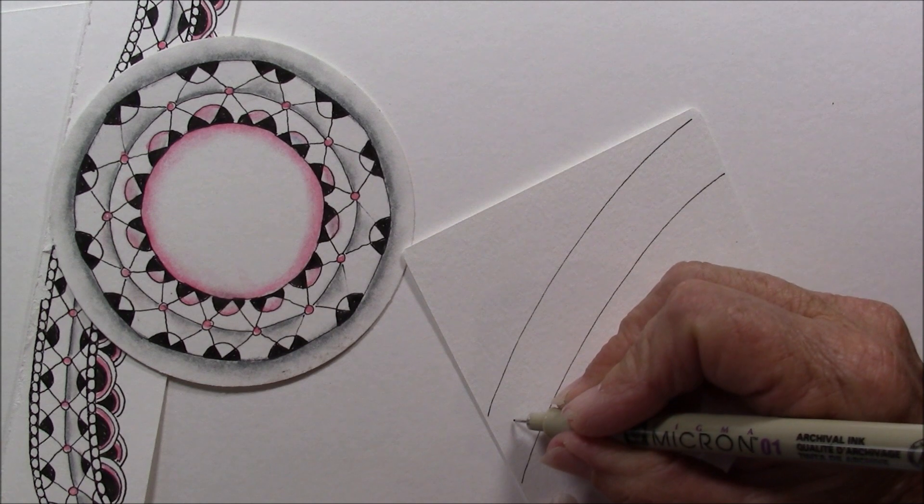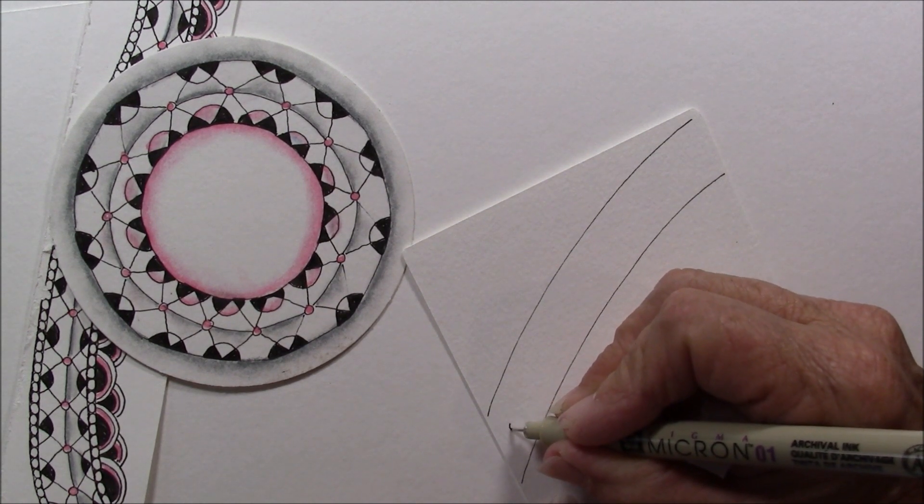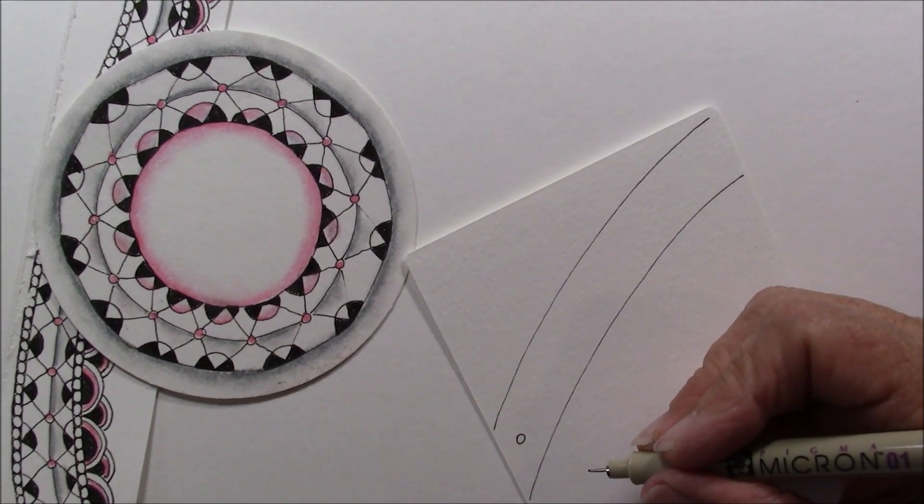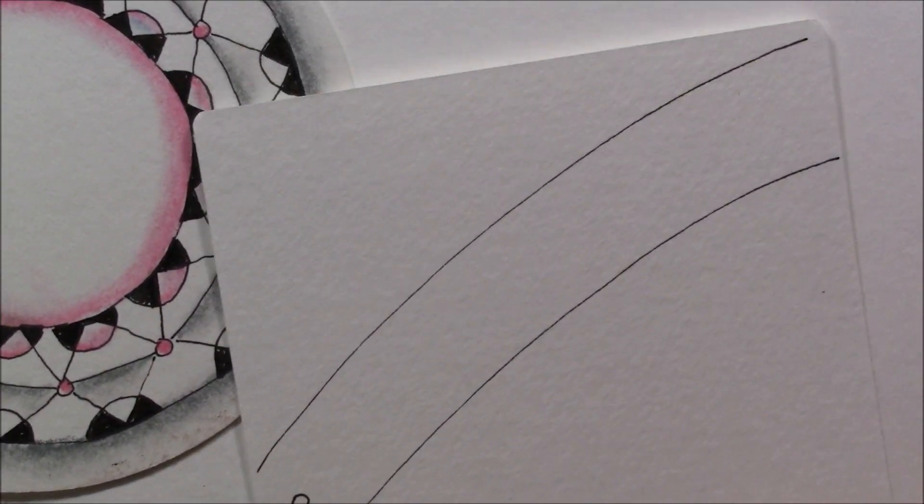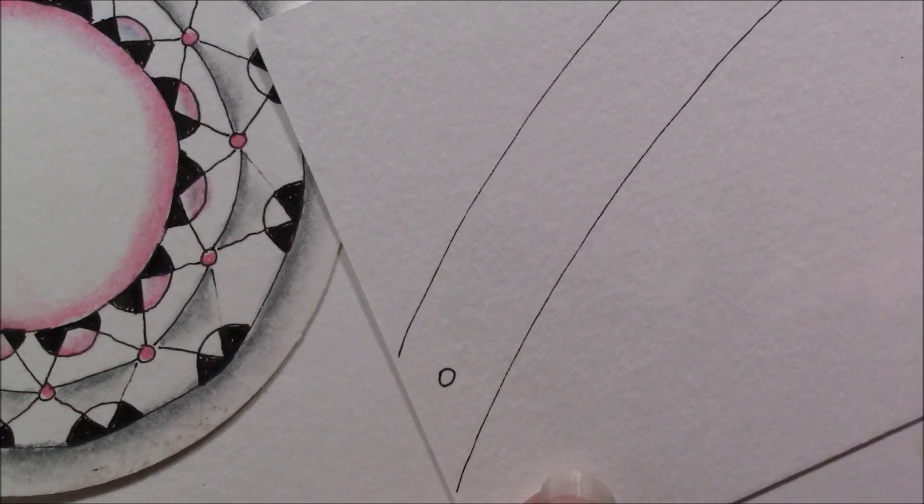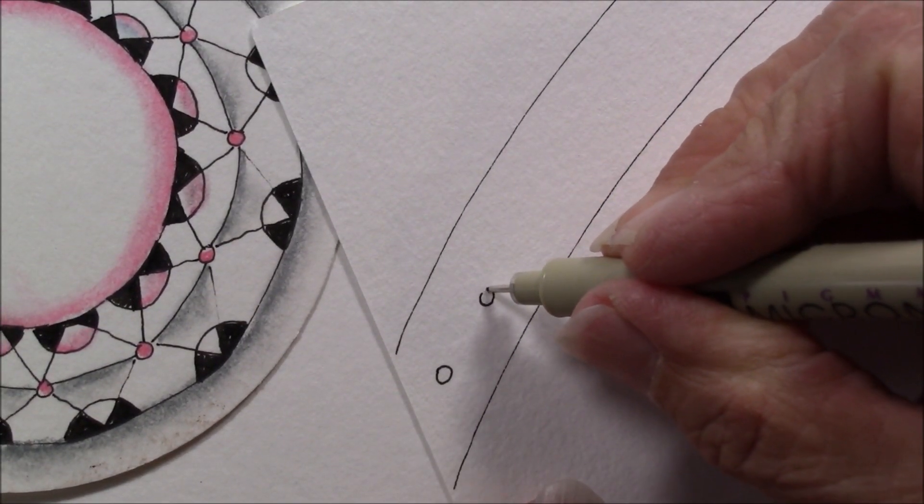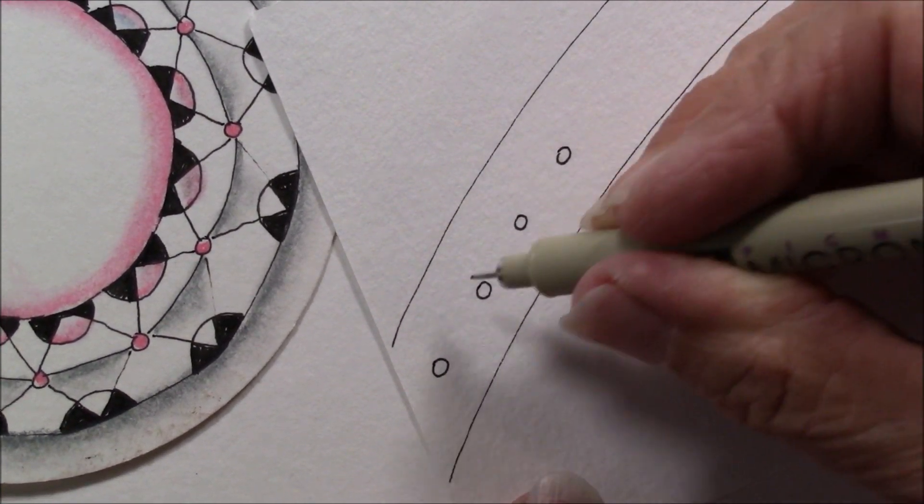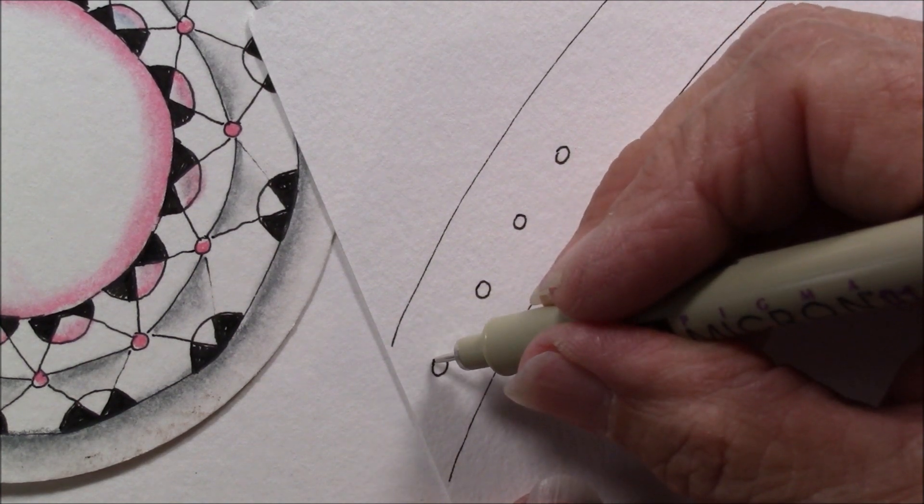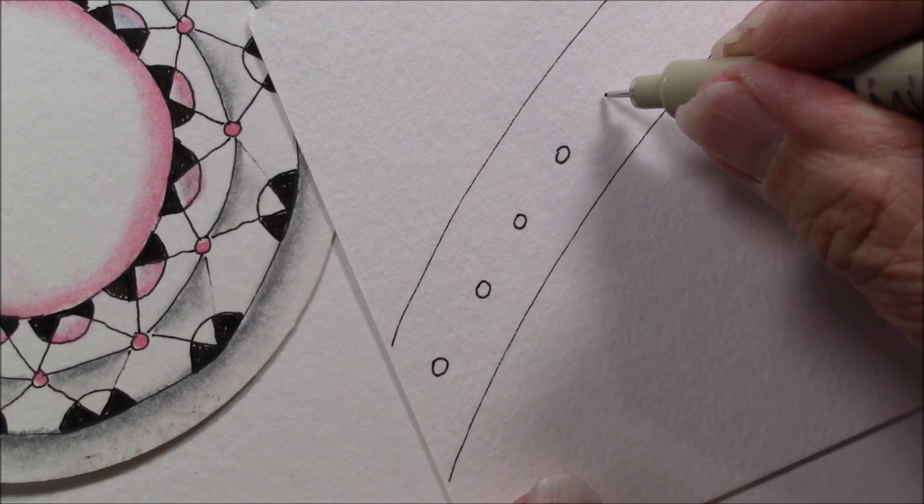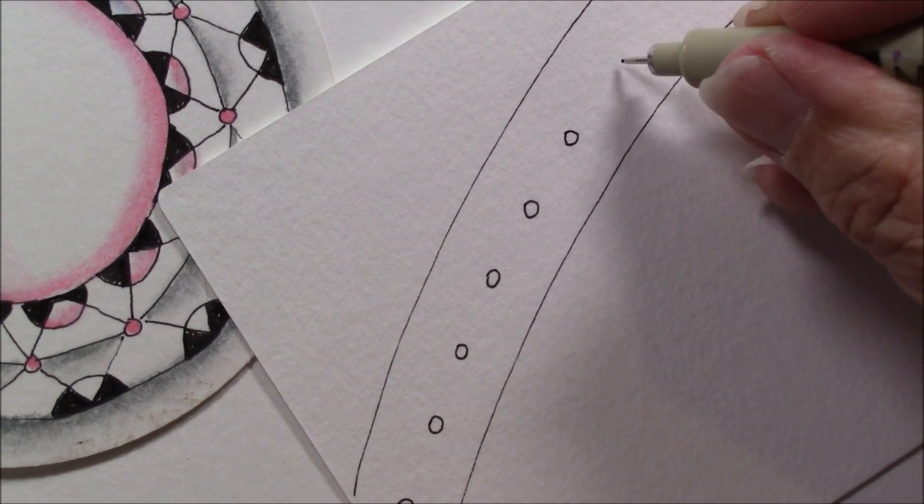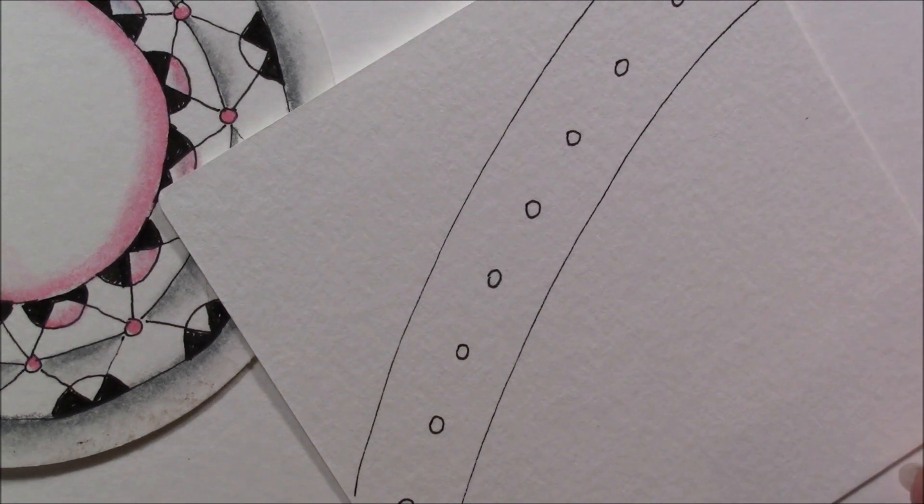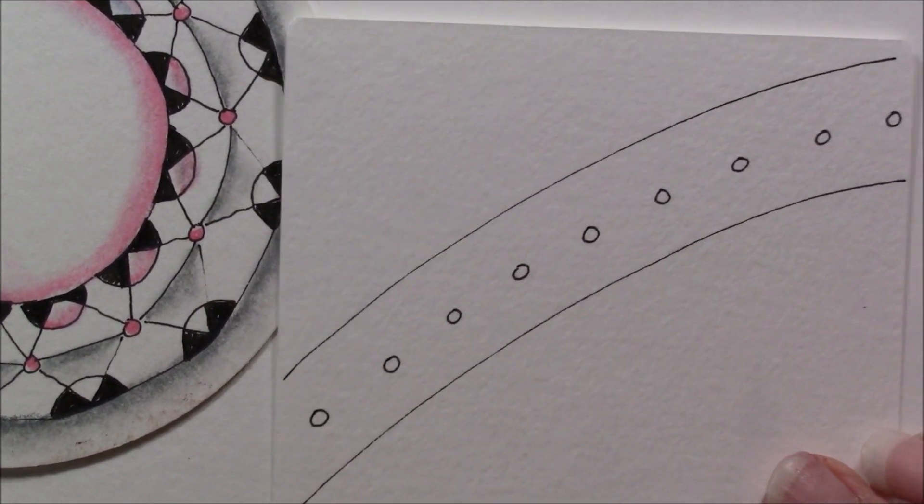So I've got my two lines, and now down the center I'm going to add some circles. Let me scan in a little bit so you can see this just a little bit better. I'm going to add circles and space them evenly apart, probably about the same distance from here to here. And I just spaced my little circles all the way down.